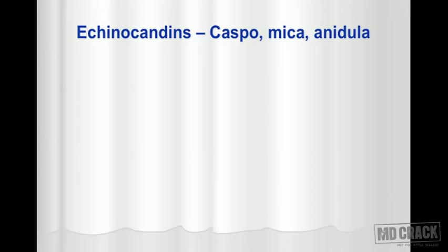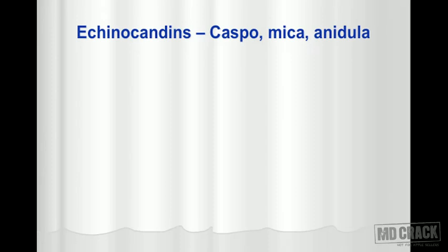The next group of systemic antifungal agents is the echinocandins — namely caspofungin, micafungin, and anidulafungin. They are also called 'fungins.' This is a newer group of antifungal drugs, and their mechanism of action is inhibition of beta-1,3 glucan synthesis, which is required for fungal cell wall synthesis.